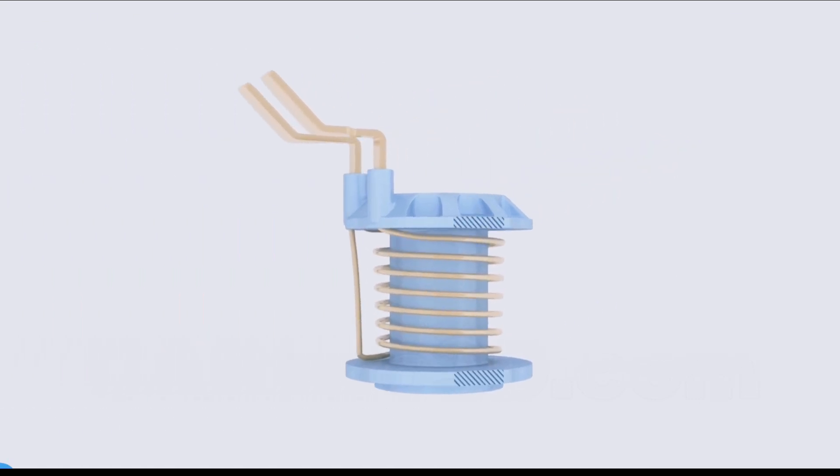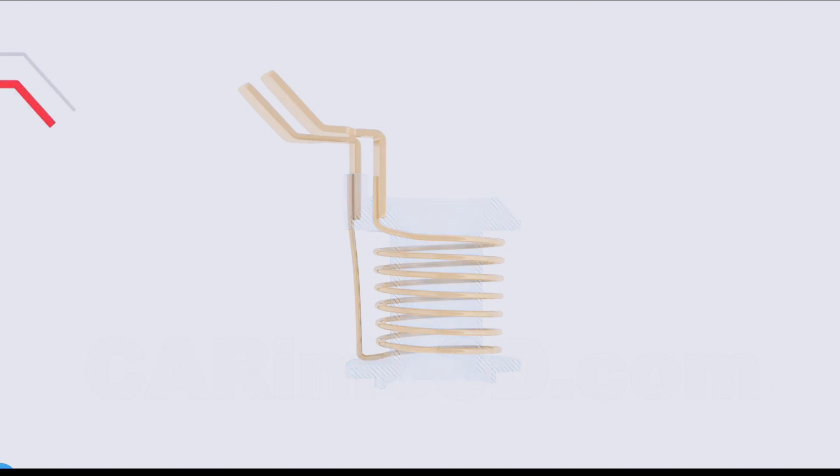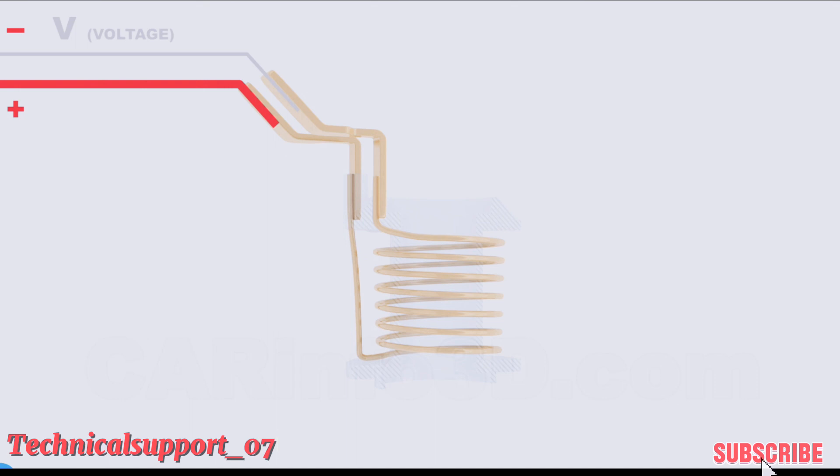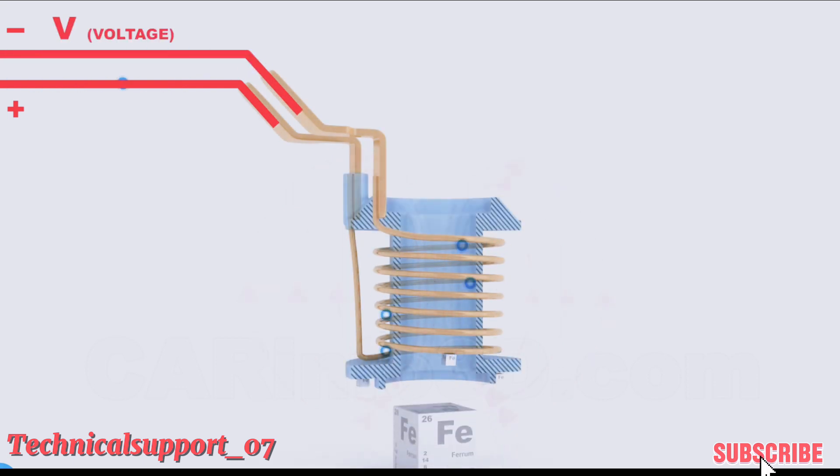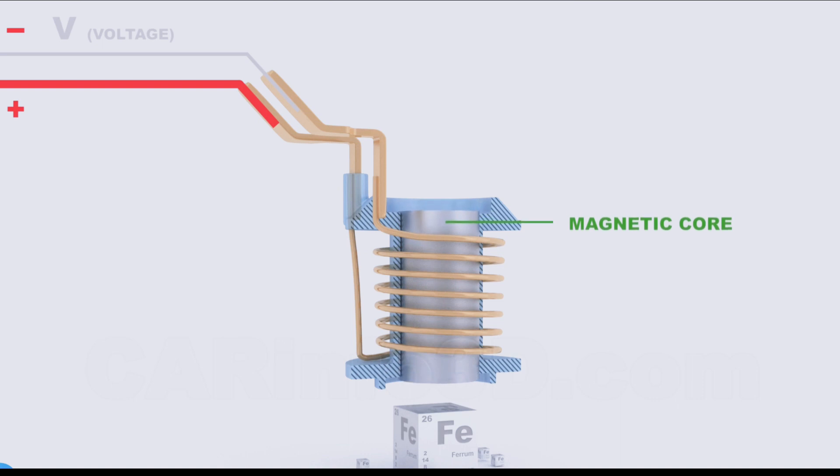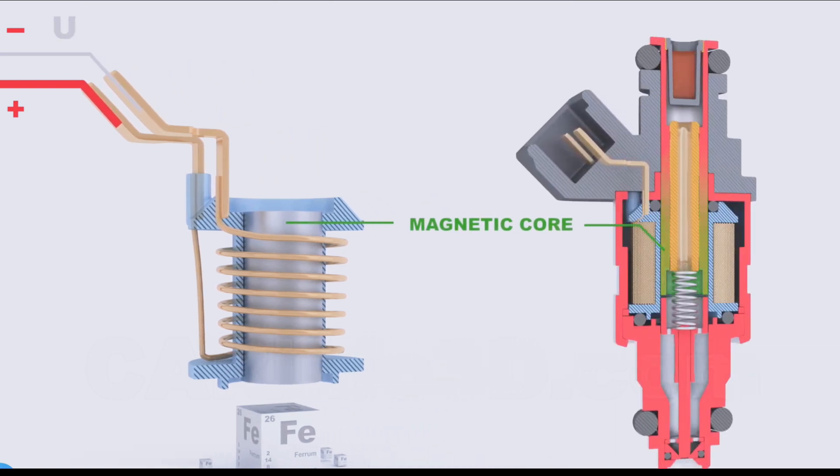This is a simplified diagram of the electromagnetic coil. As you can see, both ends are linked to the injector connector. As an electric current passes through the coil, it generates a magnetic field. However, this is a rather weak field. To amplify and concentrate the magnetic field, a magnetic core is installed inside the coil.